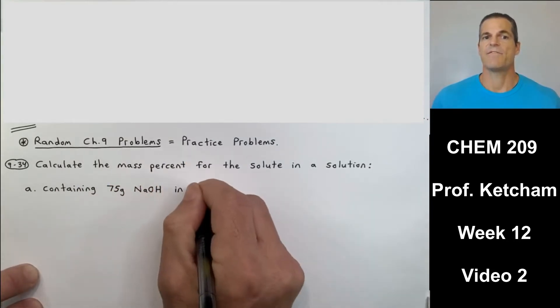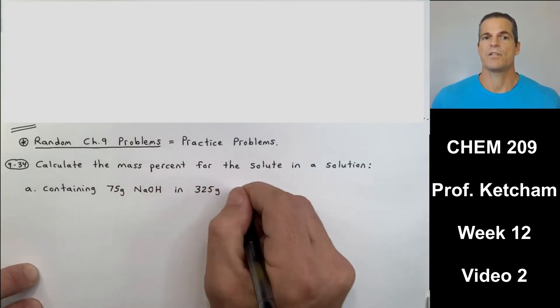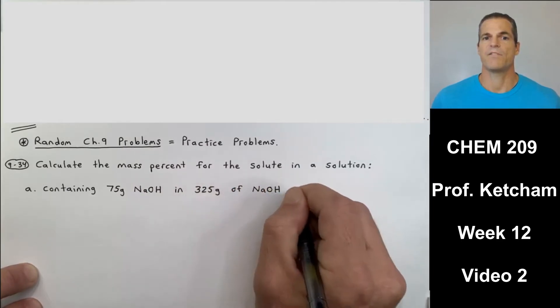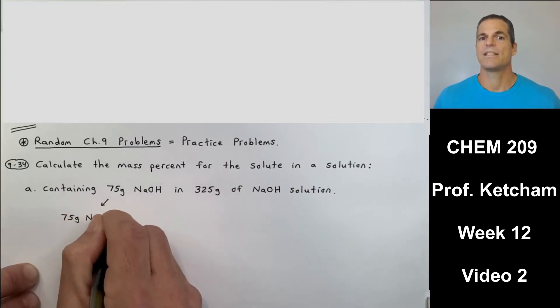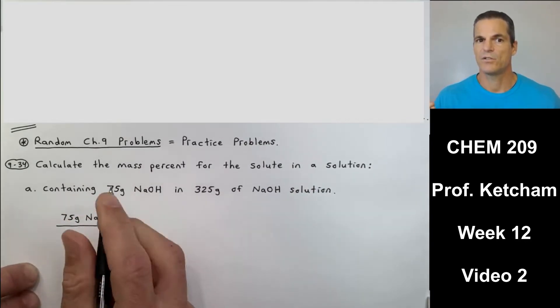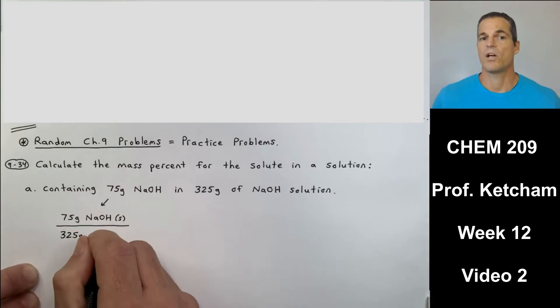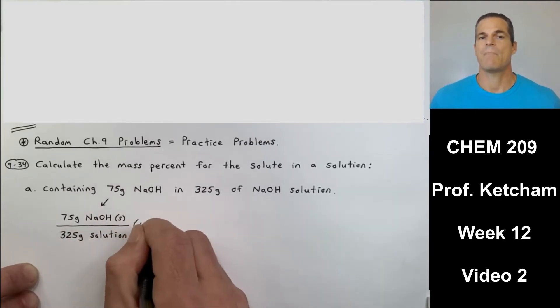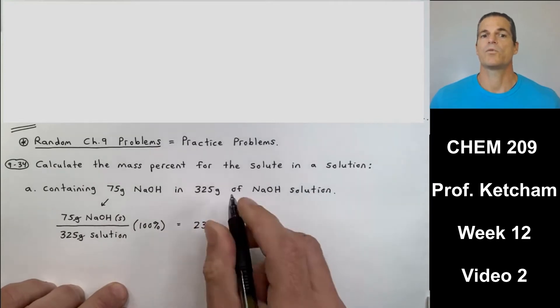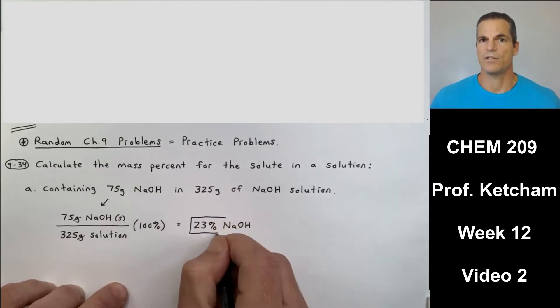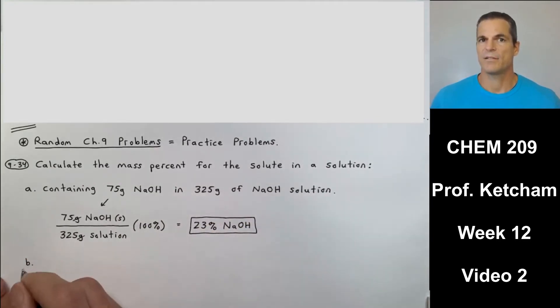Calculate the mass percent for the solute in the solution containing 75 grams of NaOH and 325 grams of NaOH solution. So they're telling us that 325 grams is the mass of the entire solution. So it's mass of solute divided by mass of the solution times 100 percent. We get 23 percent NaOH. Not 23 percent, but 23 percent NaOH. Don't forget that.